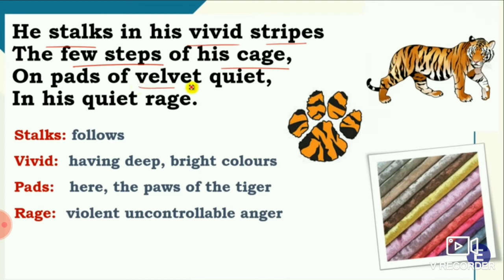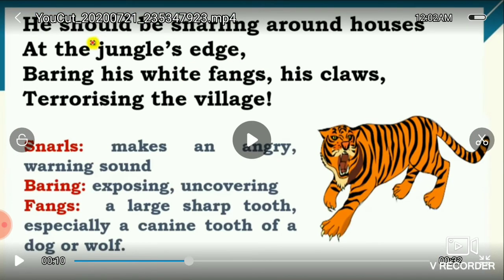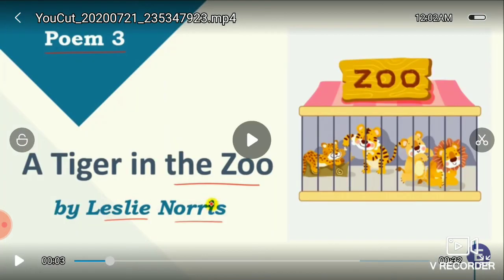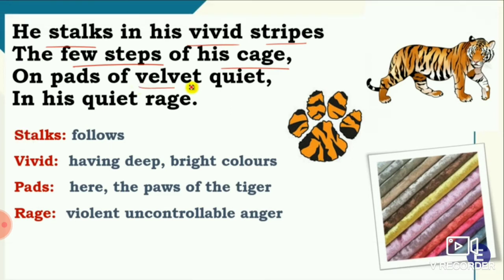Here we go with the first stanza. Please concentrate on the words and word meanings: 'He stalks in his vivid stripes the few steps of his cage, on pads of velvet quiet, in his quiet rage.' We will see the spellings and meanings of these words.